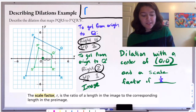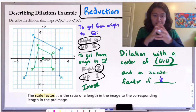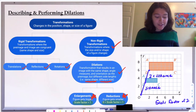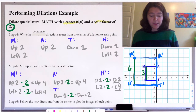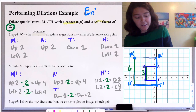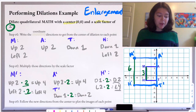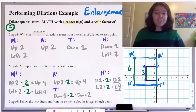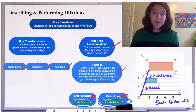This is an example of what we call a reduction, because the pre-image is bigger than the image — the image is smaller, reducing in size, and the scale factor is between zero and one. In the example we did ourselves with quadrilateral MATH, the scale factor was two, which is an example of an enlargement. Our original shape MATH was smaller than the image — it got bigger — and a scale factor greater than one always tells us we have an enlargement. Great job, everyone.